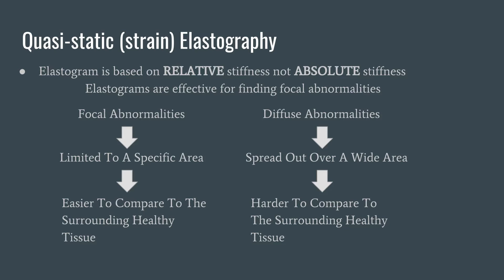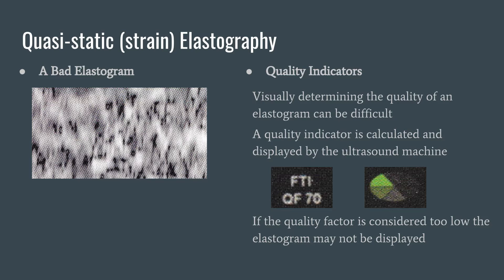So an elastogram isn't so great if the abnormality is diffuse, being widespread throughout an area. An elastogram, however, is highly effective in detecting focal abnormalities, like finding a localized lesion in an otherwise overall healthy looking tissue. But how do we know whether an elastogram is appropriate to use for diagnostic interpretation? It's difficult to say whether an elastogram is a good one, but here's an extreme example of a really nasty one — it looks like a blur. Most of the time, determining an elastogram's quality by eye isn't going to be so easy.